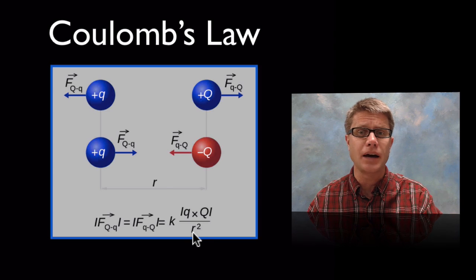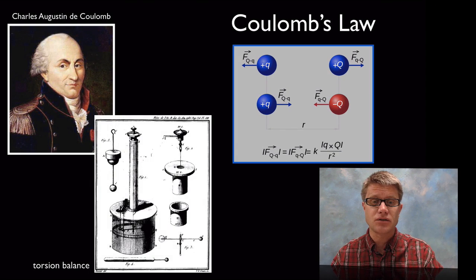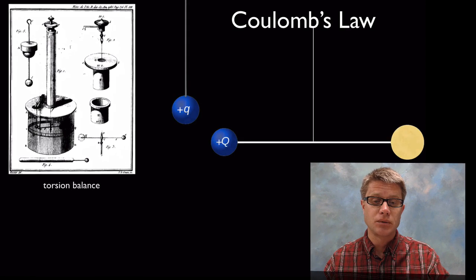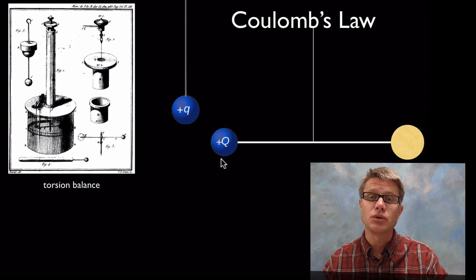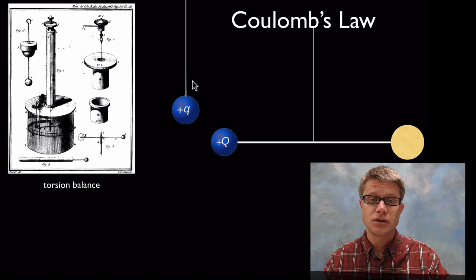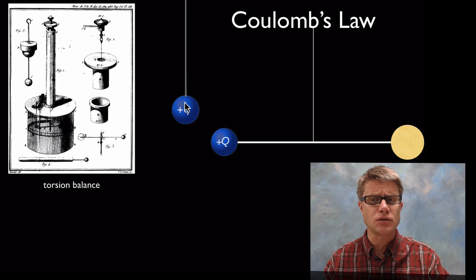Now how did he discover this before we had electronics and even electricity had really been discovered? He used something called a torsion balance. And this is one of his sketches of a torsion balance. It looks a little complex but it's really simple. All he would do is he would take a sphere and he would charge that sphere. And so we're talking about electrical, static electrical energy. And so that was suspended by a fiber that went all the way down here in the torsion balance. So he'd give this a positive charge. And he would give this a positive charge as well.